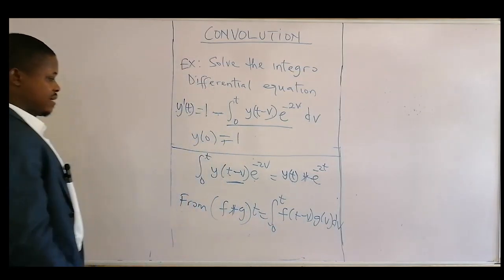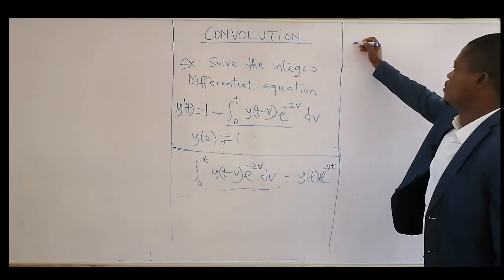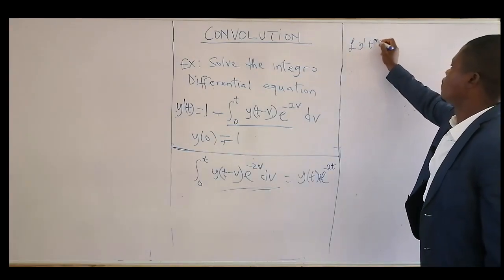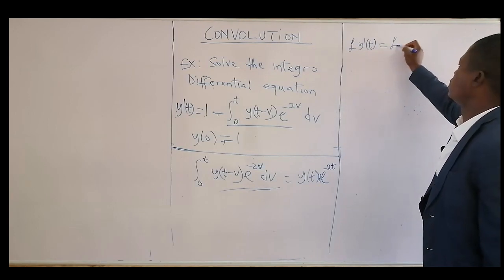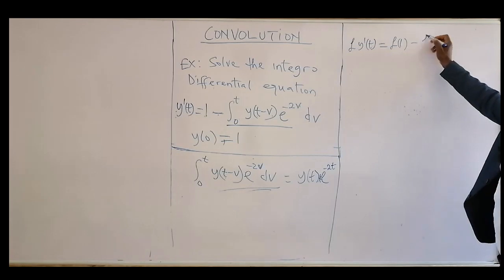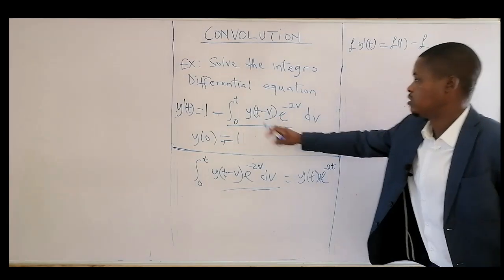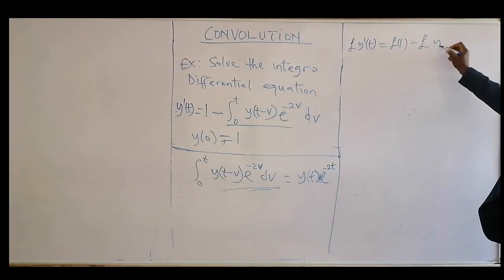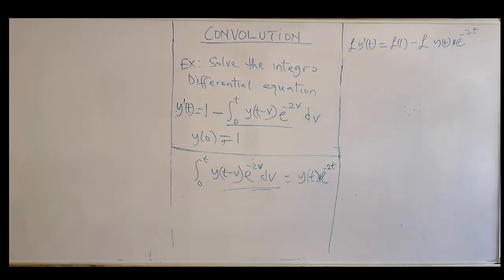Applying that, we bring the convolution back to the left-hand side and take the Laplace transform of the whole equation. We have Laplace of e^t equals Laplace of 1 minus Laplace of the convolution y(t) * e^(-2t), which by the convolution theorem equals Laplace of y(t) times 1/(s + 2).